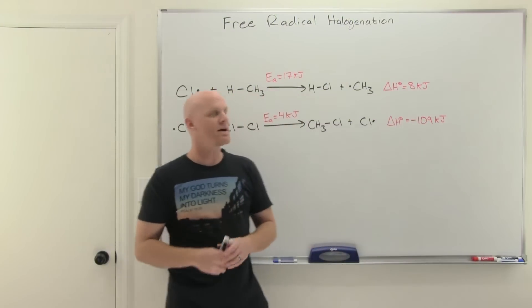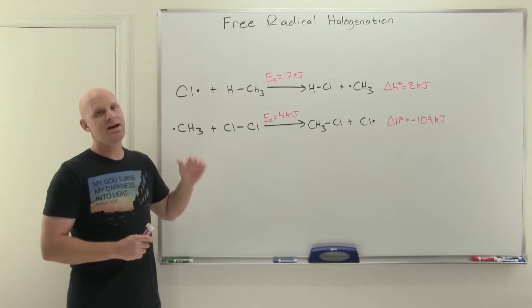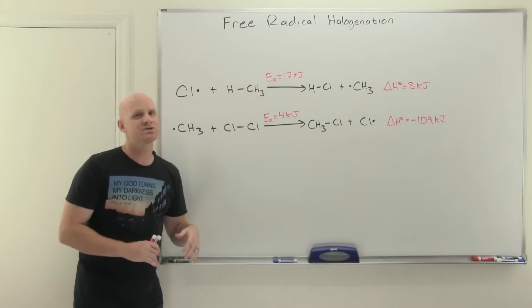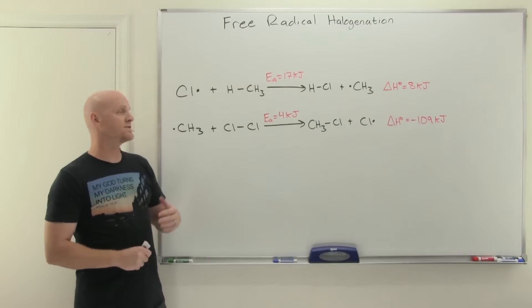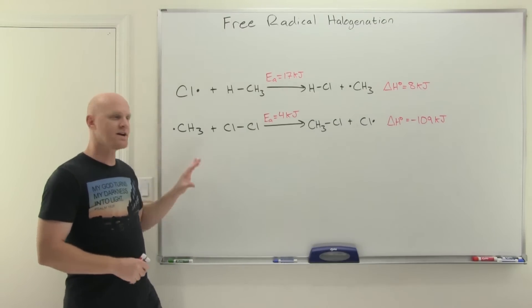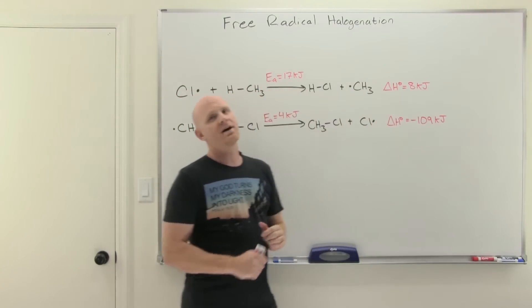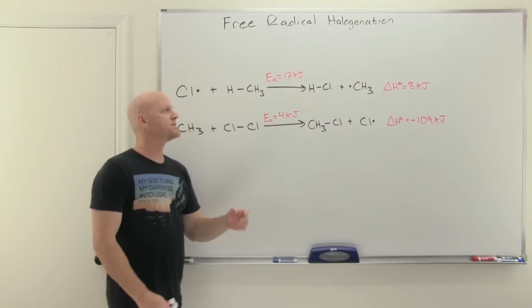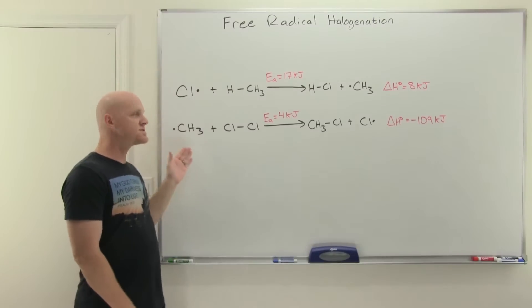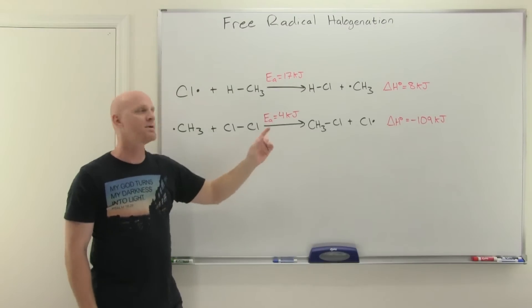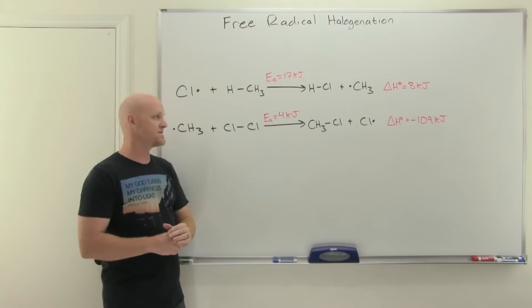Let's take a look at the mechanism for radical halogenation. It is different than anything you've ever seen and we'll represent it differently as well. Instead of a linear chain like this turns into this, turns into this, we find that we actually present this as: we produce something in one step and then we're going to use it to do something else in the next step instead of continuing on, and there's going to be a reason for that as we'll see.